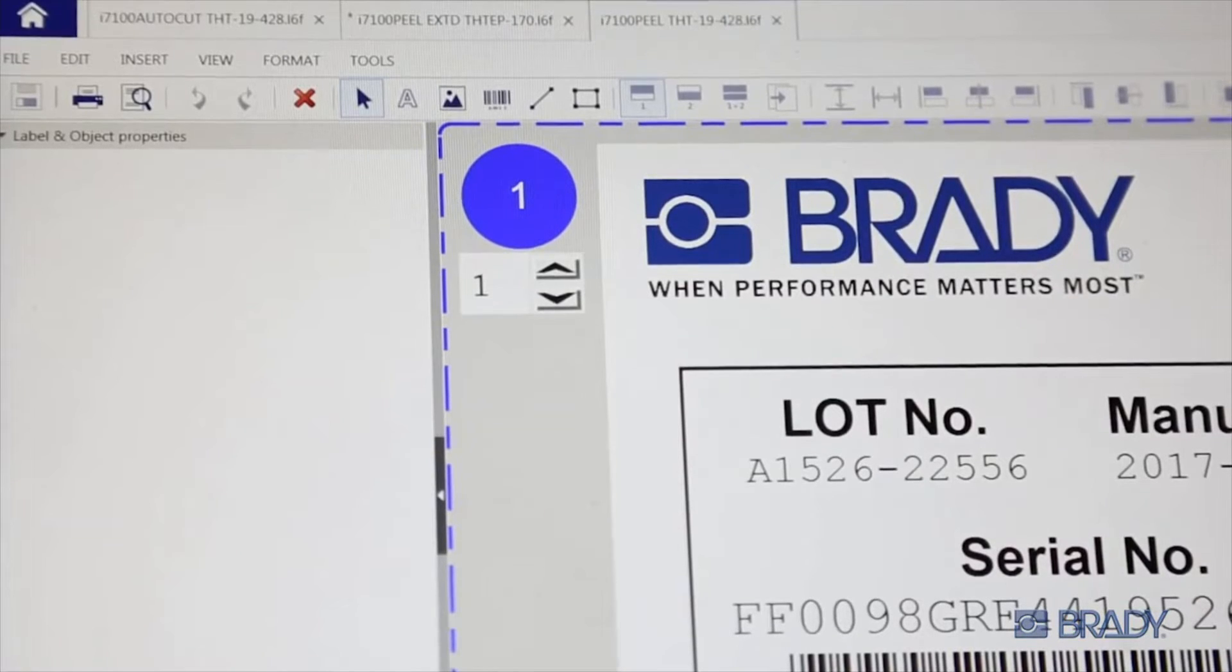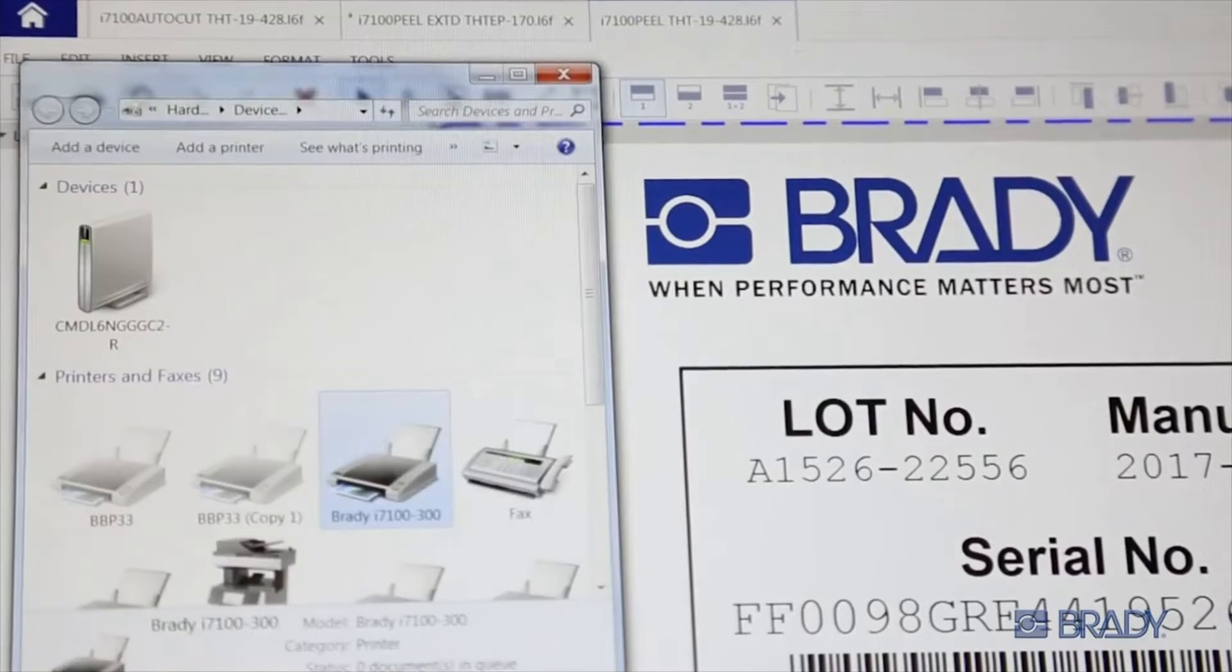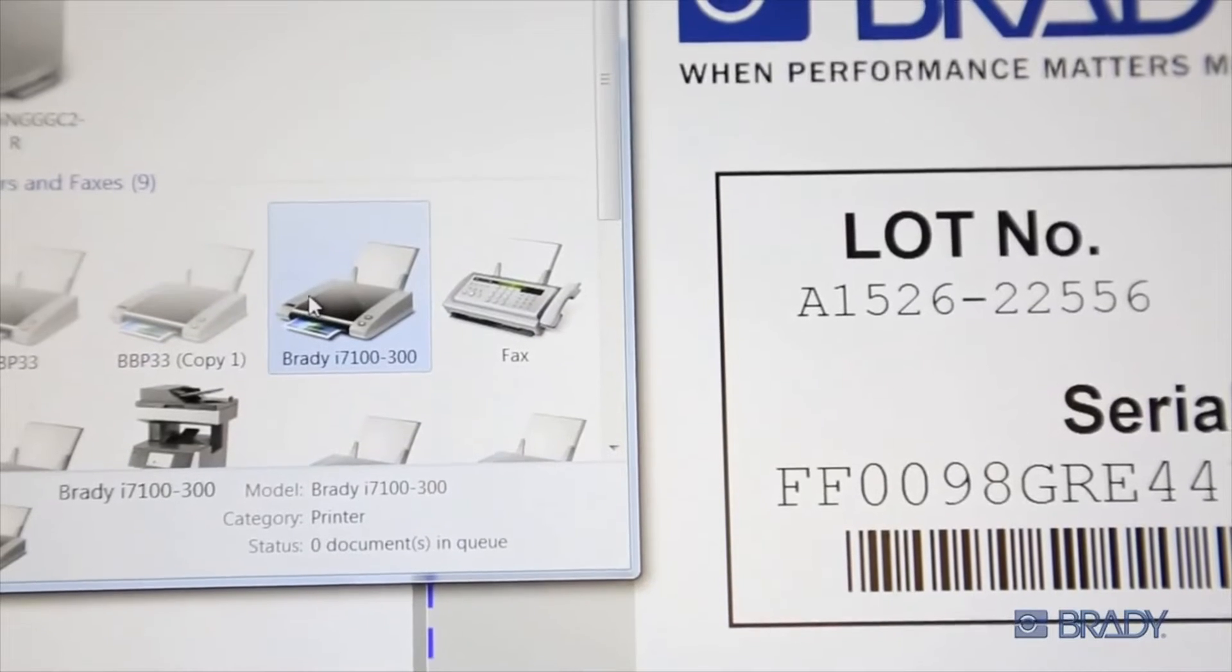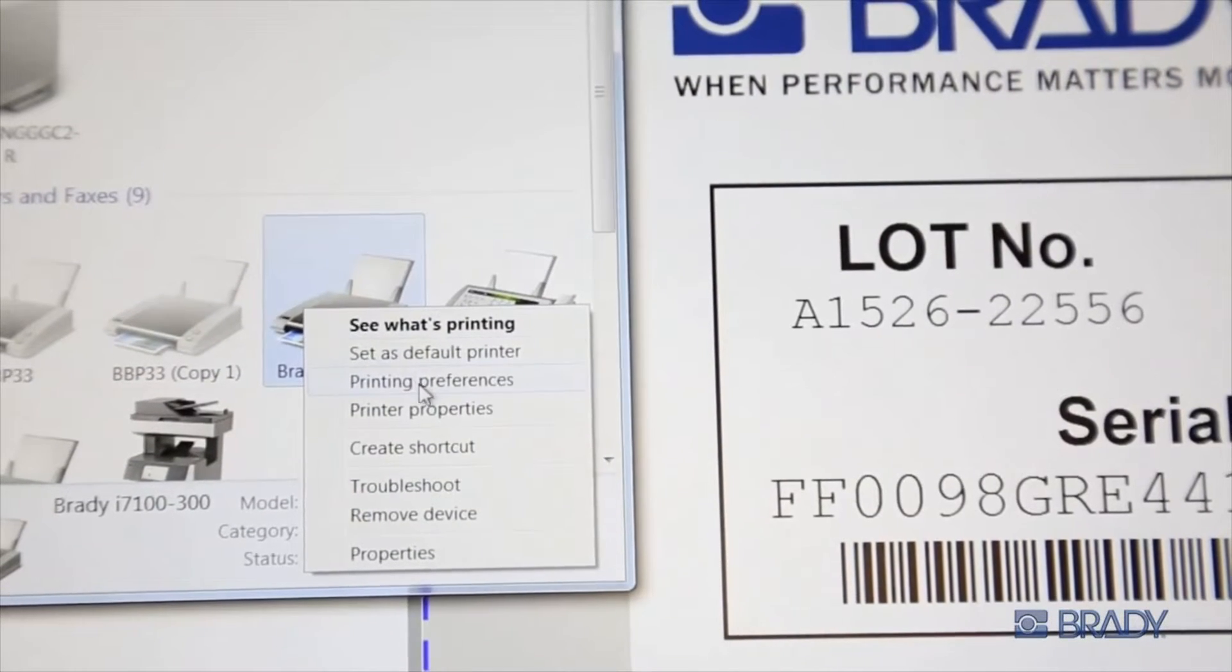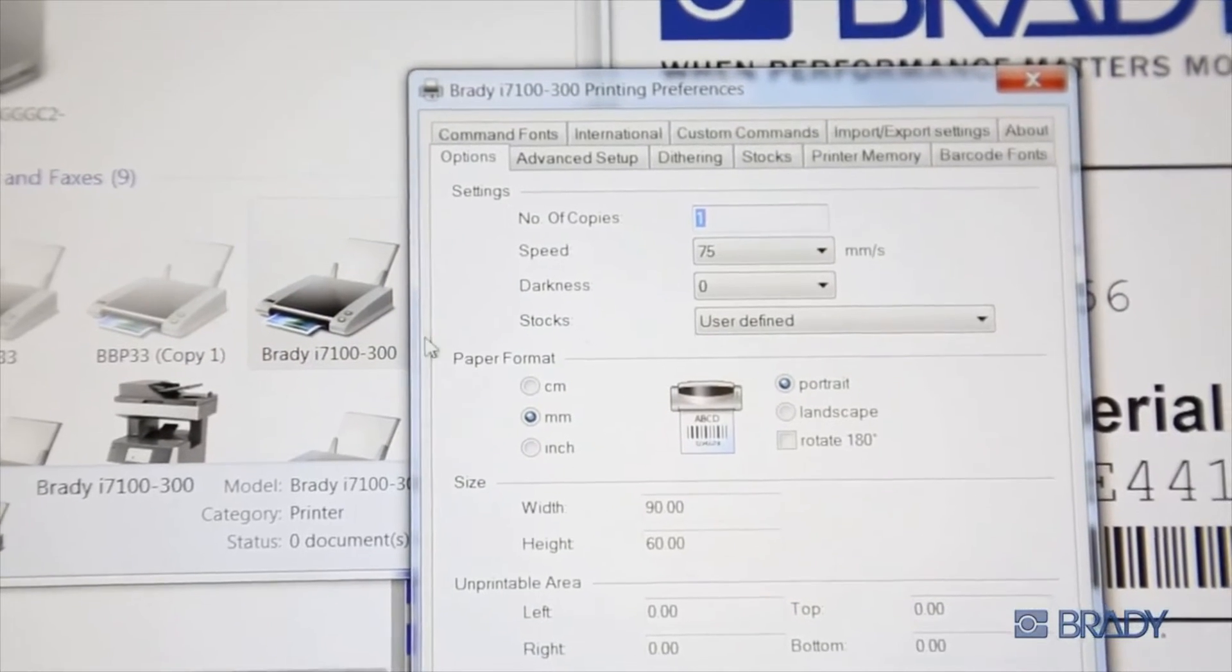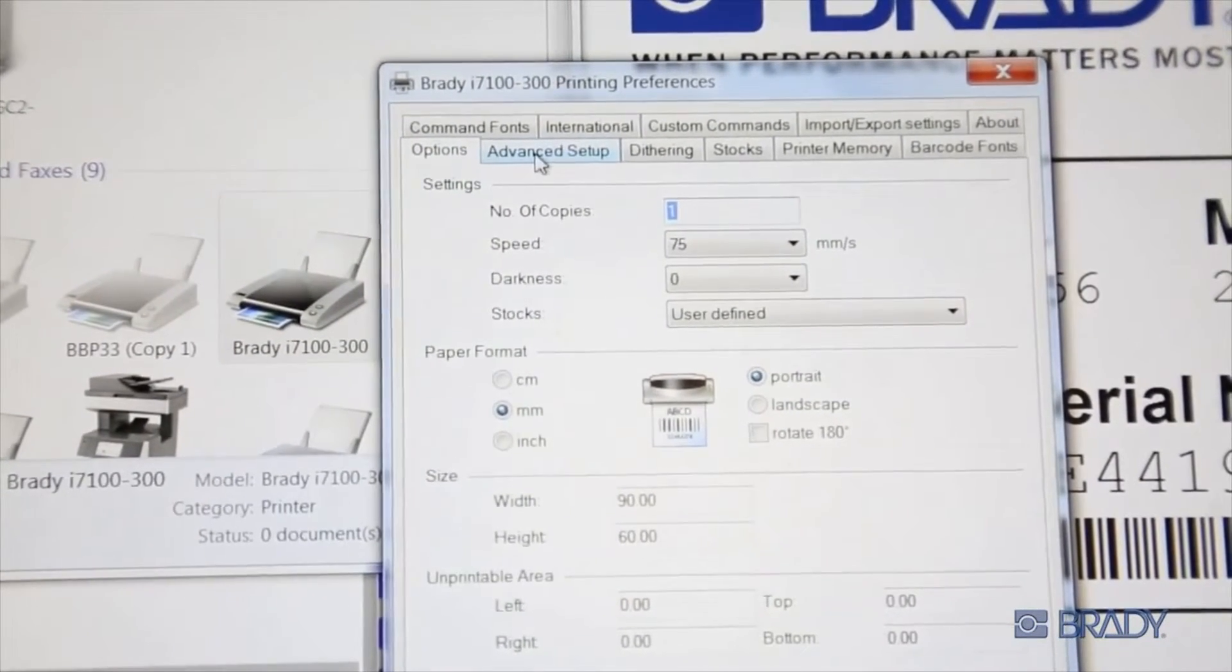Once you've installed the sensor and powered the printer on, go into your print driver to change the print job to peel mode. Open your driver, right-click and select Printing Preferences, and choose the Advanced Setup tab.